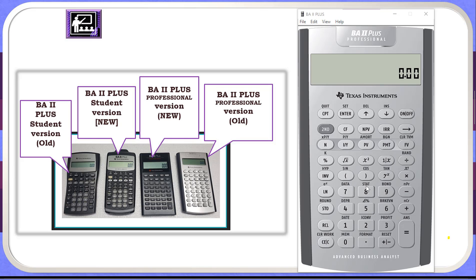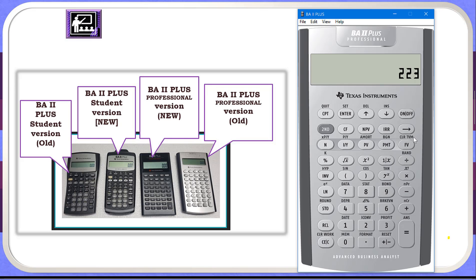Now let us talk about some of the clearing functions. Suppose I entered 233 but actually wanted to enter 223 — I have made an error in entering the data. I can use the right-facing arrow key to clear numbers on the display one at a time. Clicking it once removes the last digit; clicking again removes one more. Then I can enter the correct value. This right-facing arrow key clears numbers one at a time when we make a data entry mistake.